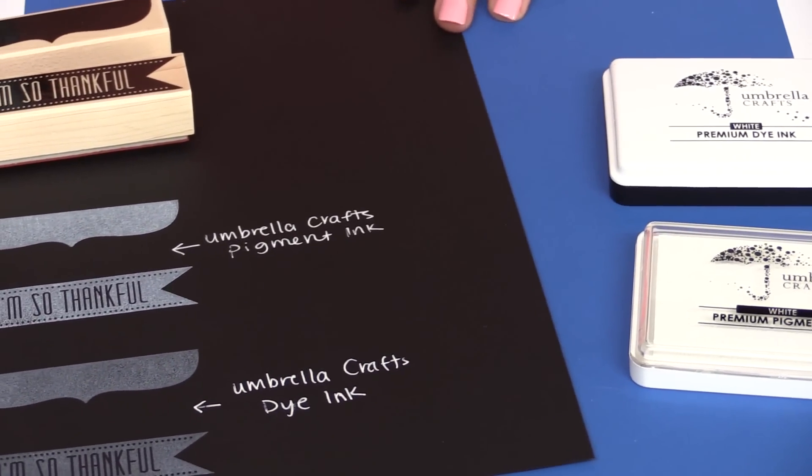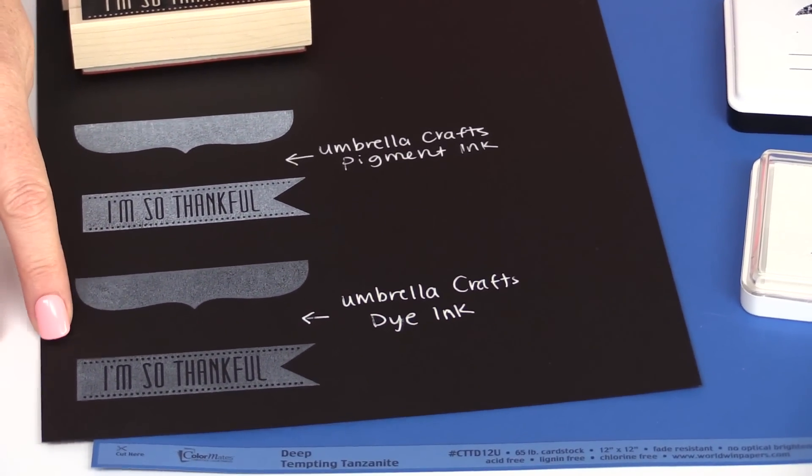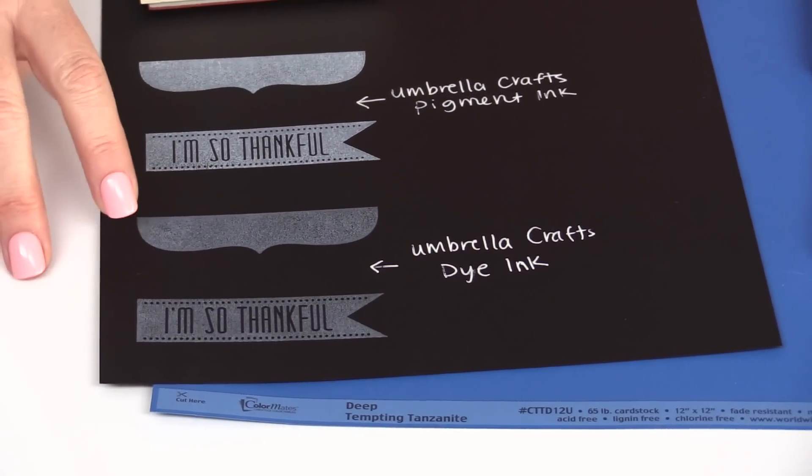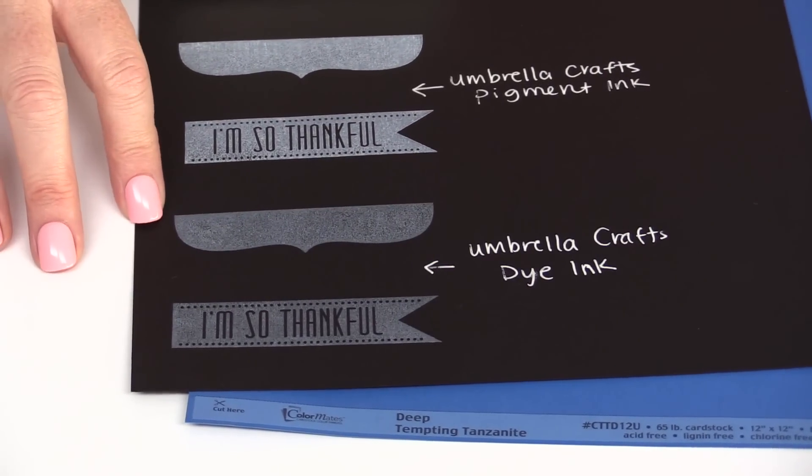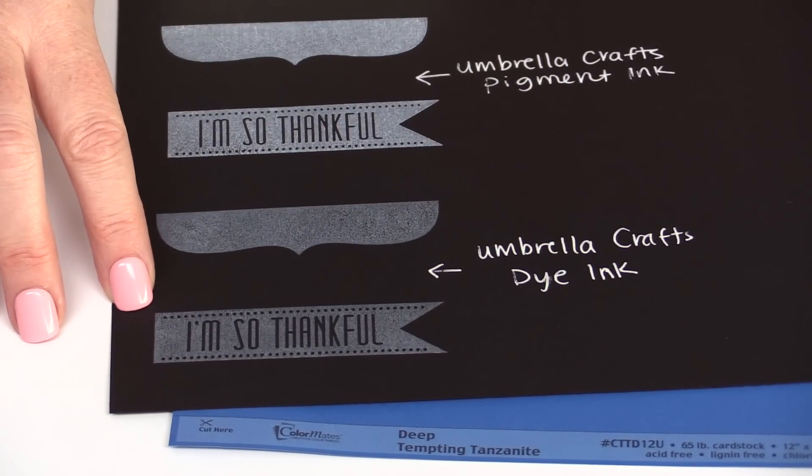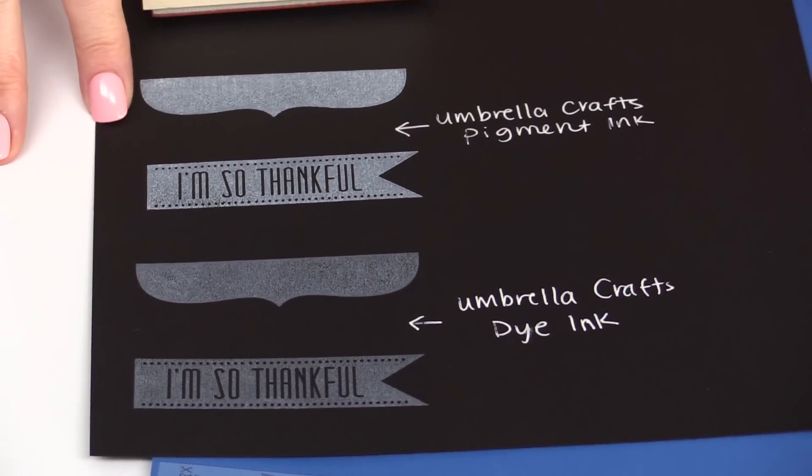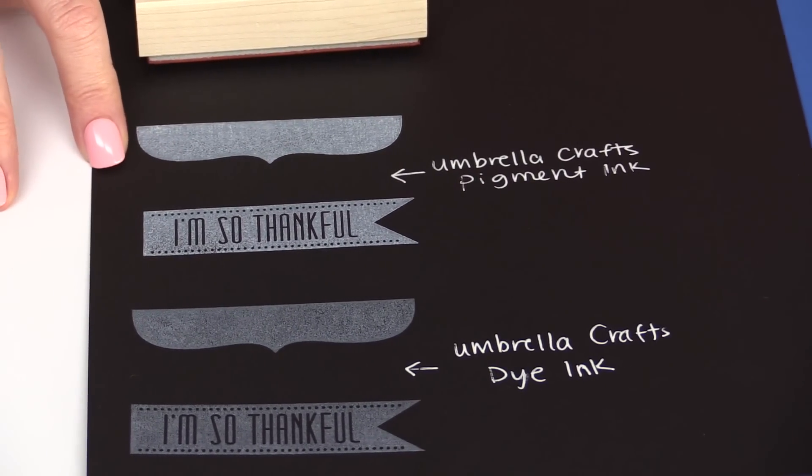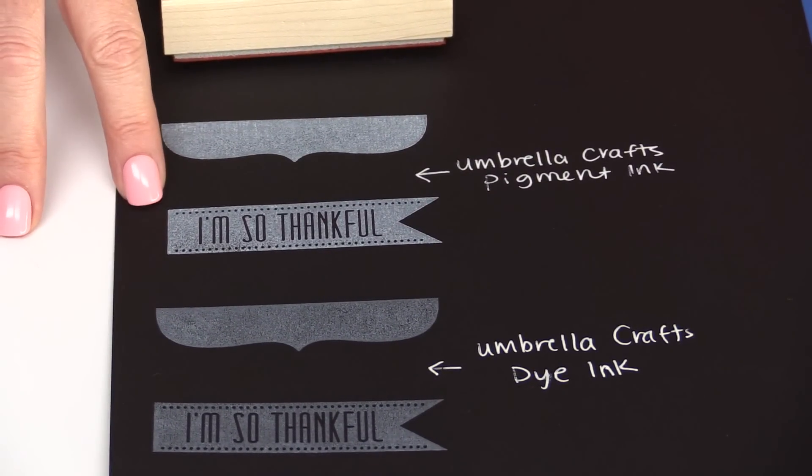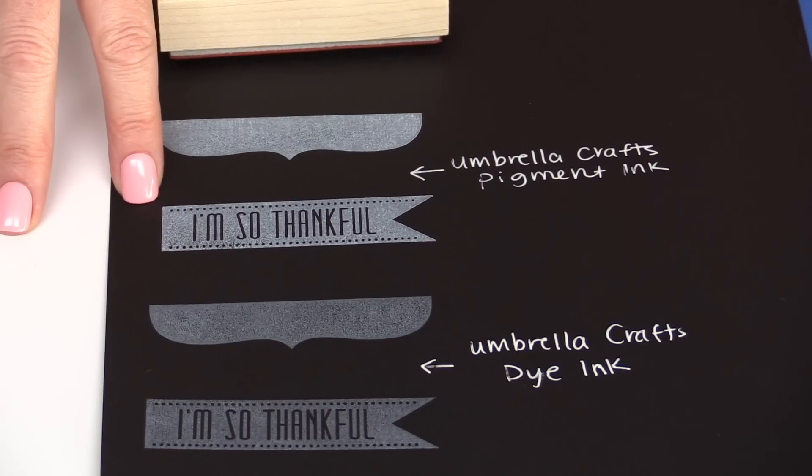Down here we have an example of the Umbrella Crafts white dye ink. The dye inks sink into the paper, so you get a lighter impression. Up here we have the pigment ink. This gives a much starker impression because the ink is like paint and sits on top of the paper.